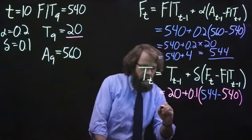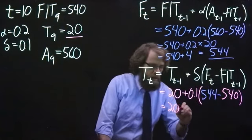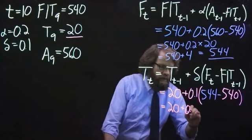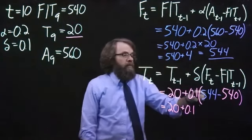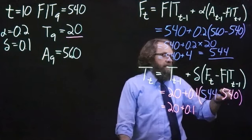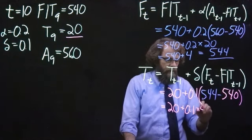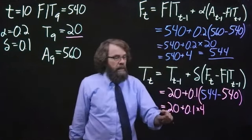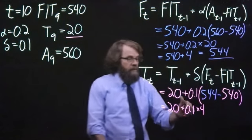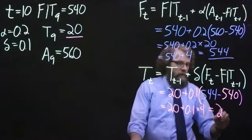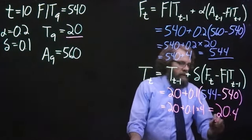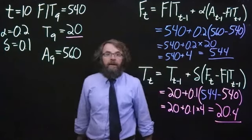So we have 20 plus 0.1 times (544 minus 540), that gives us 4. So we have 20 plus 0.1 times 4. So we get, as our new estimate of the trend, 20.4.